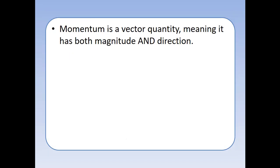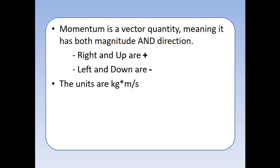Momentum is a vector quantity. It is made up of velocity, which is a vector quantity, so it has both magnitude and direction. In our class, we've defined up and right directions as positive, and left and down as negative. Whenever you write down something's momentum, you have to include the direction. The label for momentum is kilogram times meters per second, which is a really awkward unit.